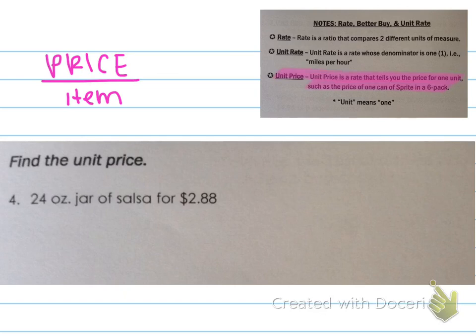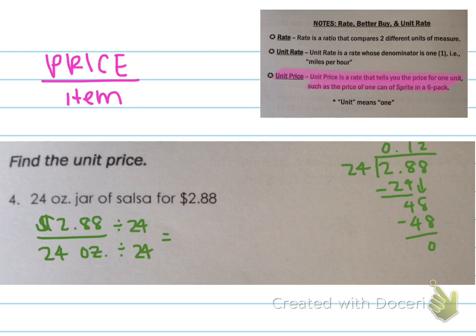So let's apply this to our problem. 24 ounce jar of salsa for $2.88. I need to write the price as the numerator of my ratio and the unit or the item as the denominator. So I have $2.88 for 24 ounces. I want to have a denominator of one. So I am going to divide both the numerator and the denominator by 24. $2.88 divided by 24 is 12 cents. So that's what we'll write on the top. And then 24 ounces divided by 24 is one. So we have one ounce. That's what goes on the bottom. So our unit price is 12 cents per ounce.